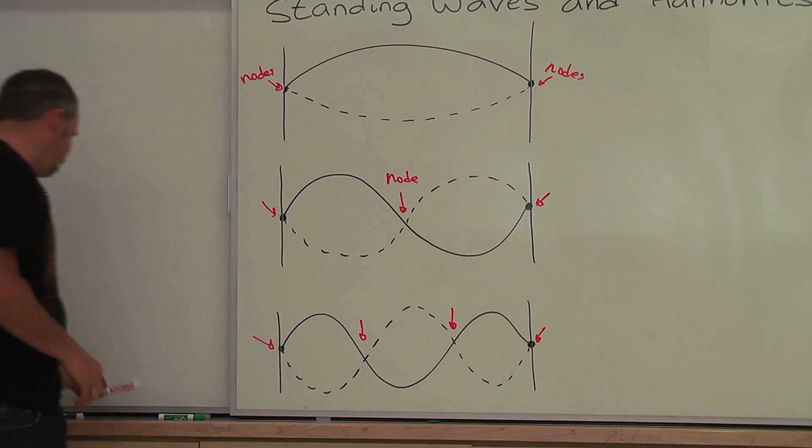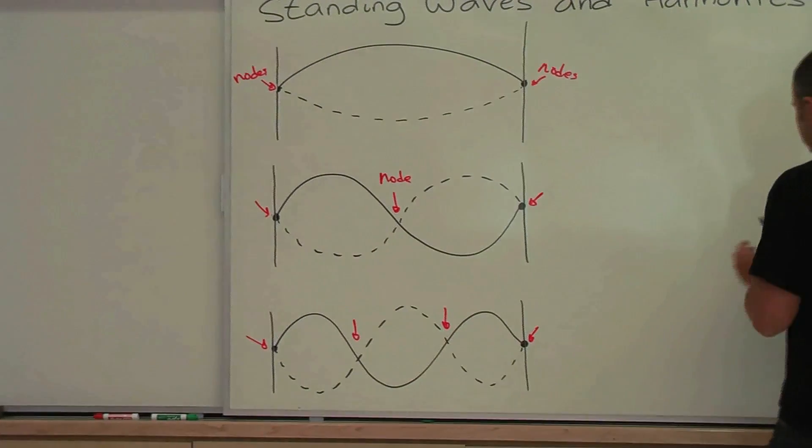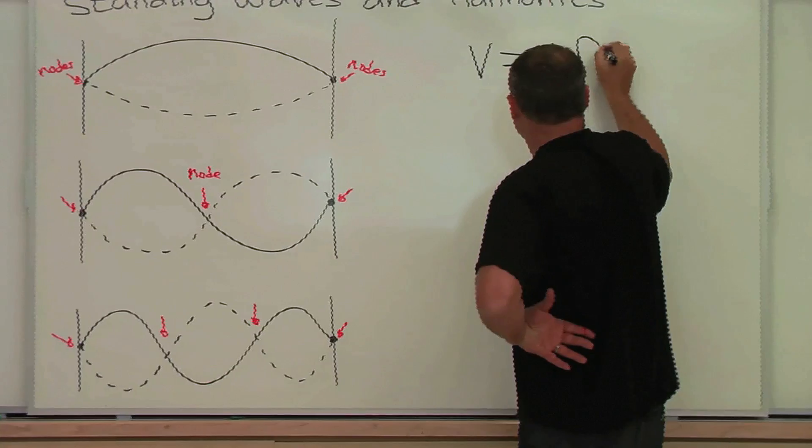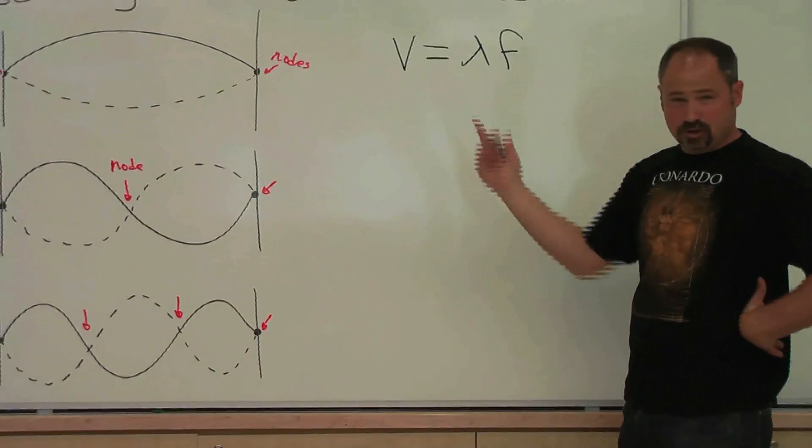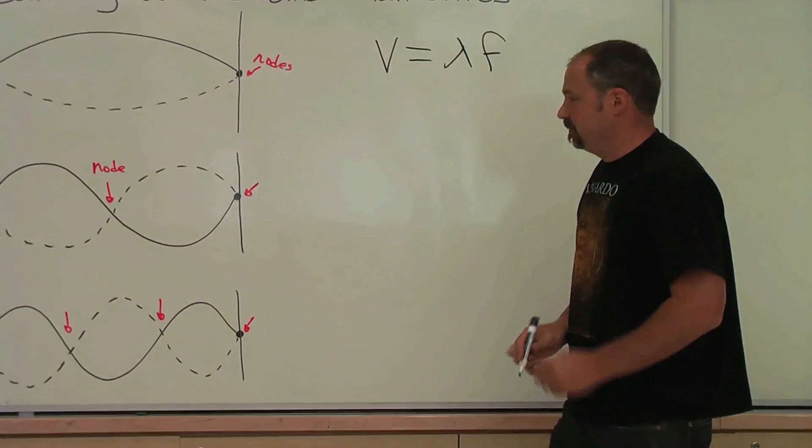Now let's derive the equation for frequency. Let's start with the wave equation. The wave equation, the speed of the wave along the string, equals the wavelength times the frequency.